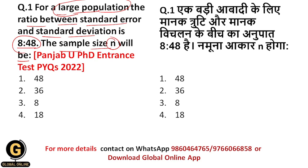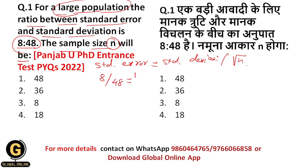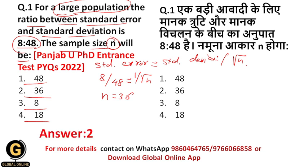So the ratio given between standard error and standard deviation is 8 is to 48. The formula is: Standard Error = Standard Deviation / √n. So standard error upon standard deviation equals 8/48, which means 8/48 = 1/√n. Solving this equation gives n = 36. The options are 48, 36, 8, 18 — so the correct answer is option 2, that is 36.